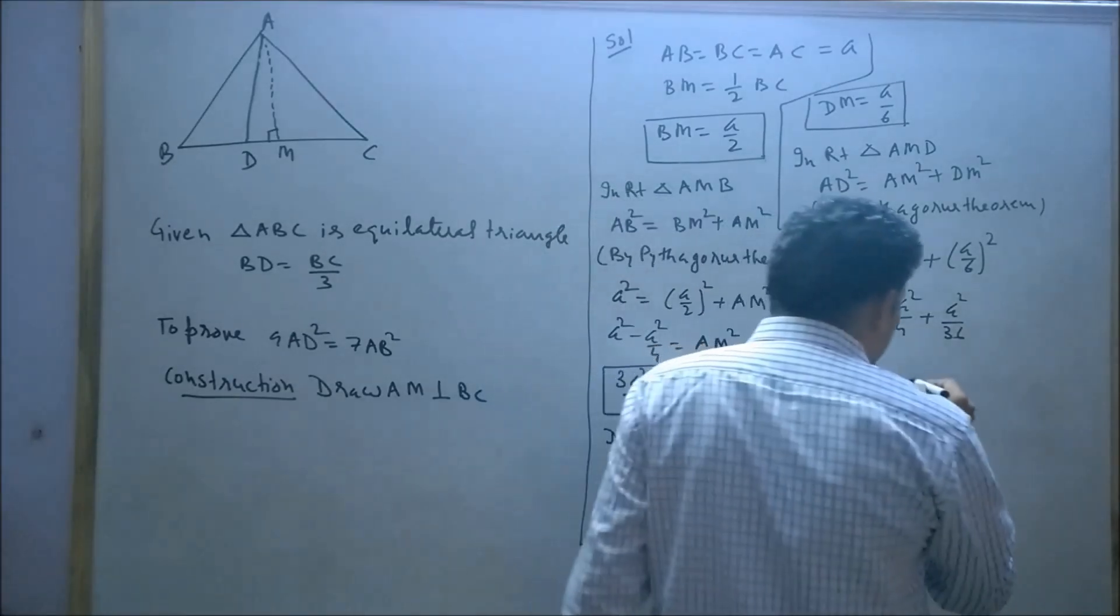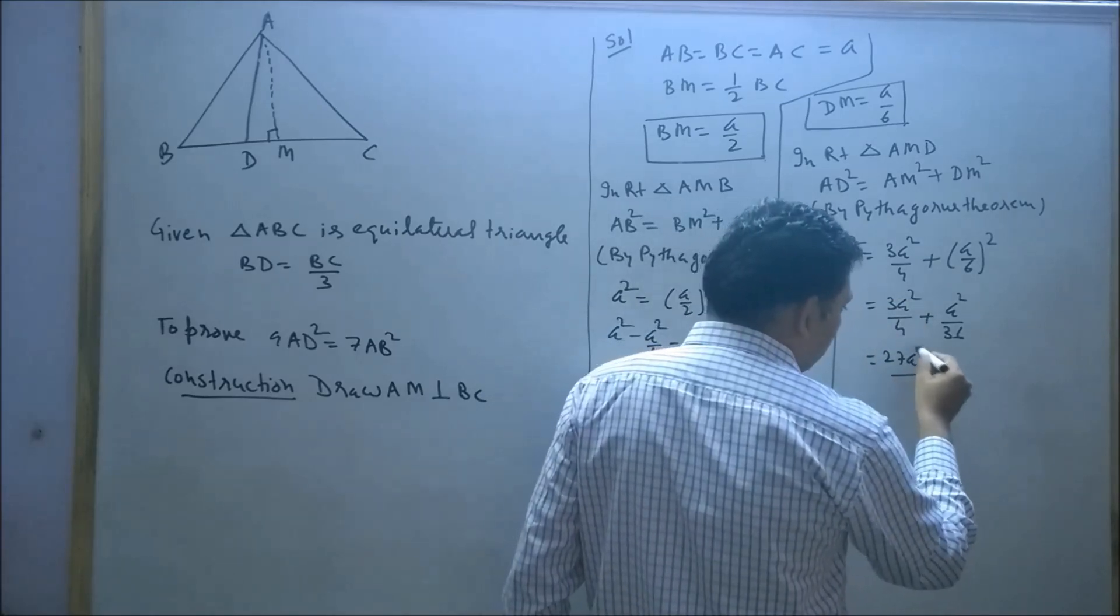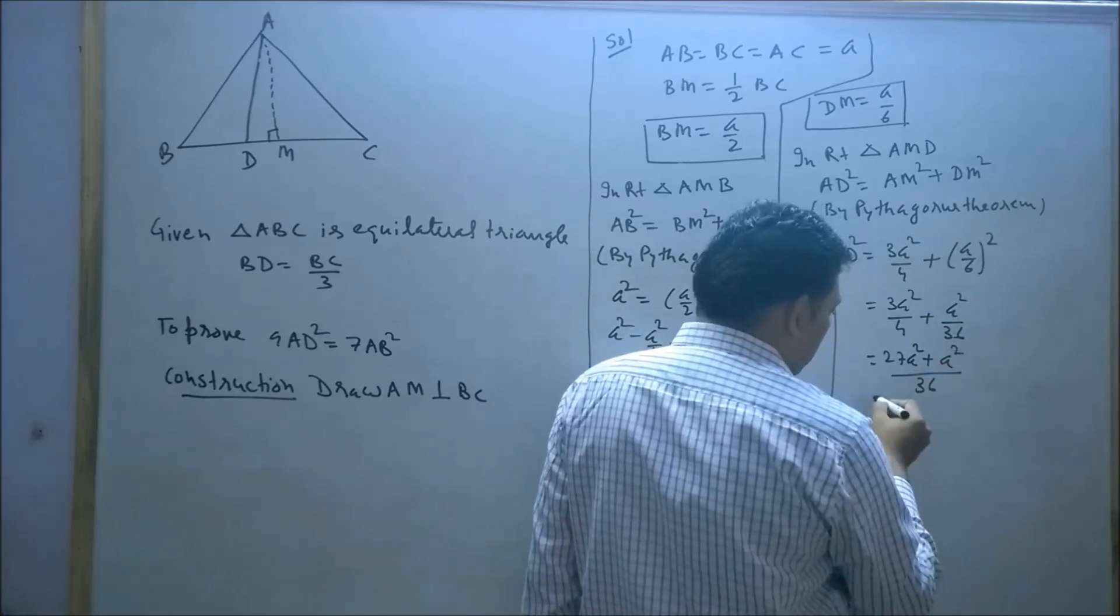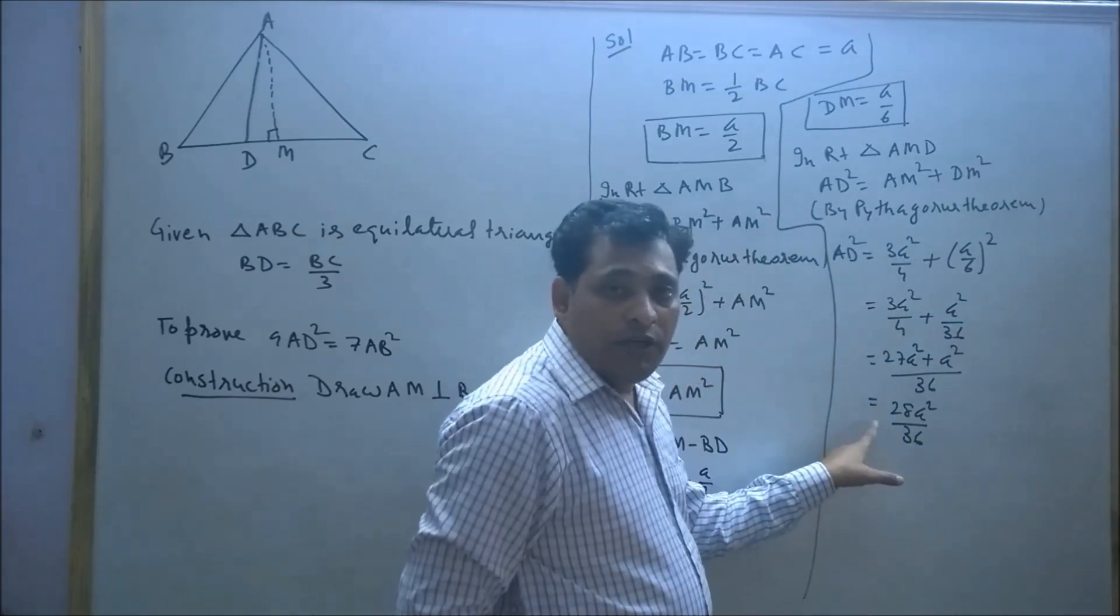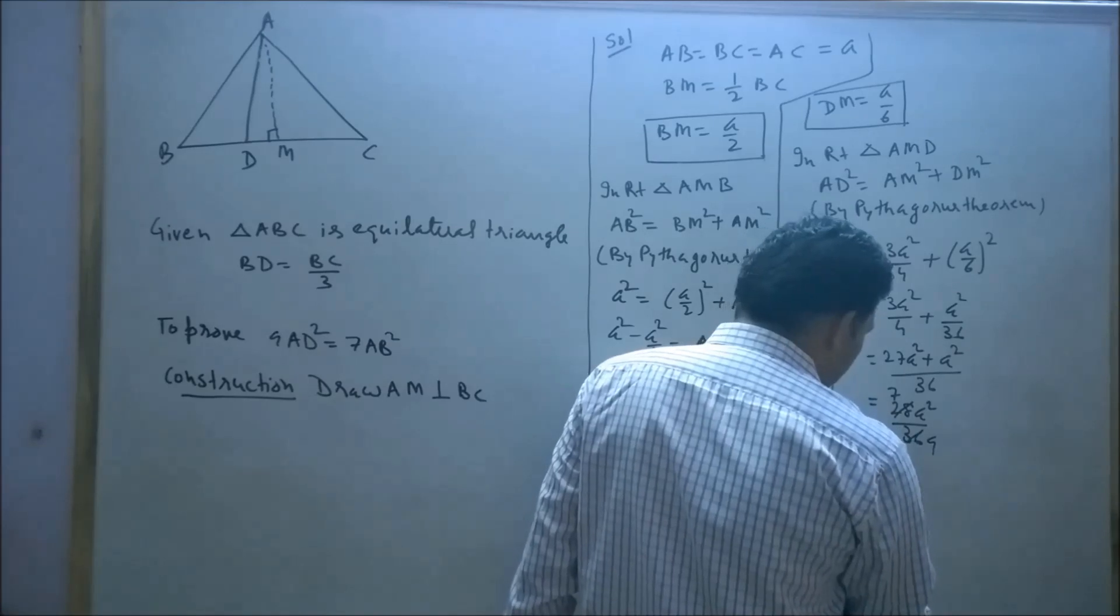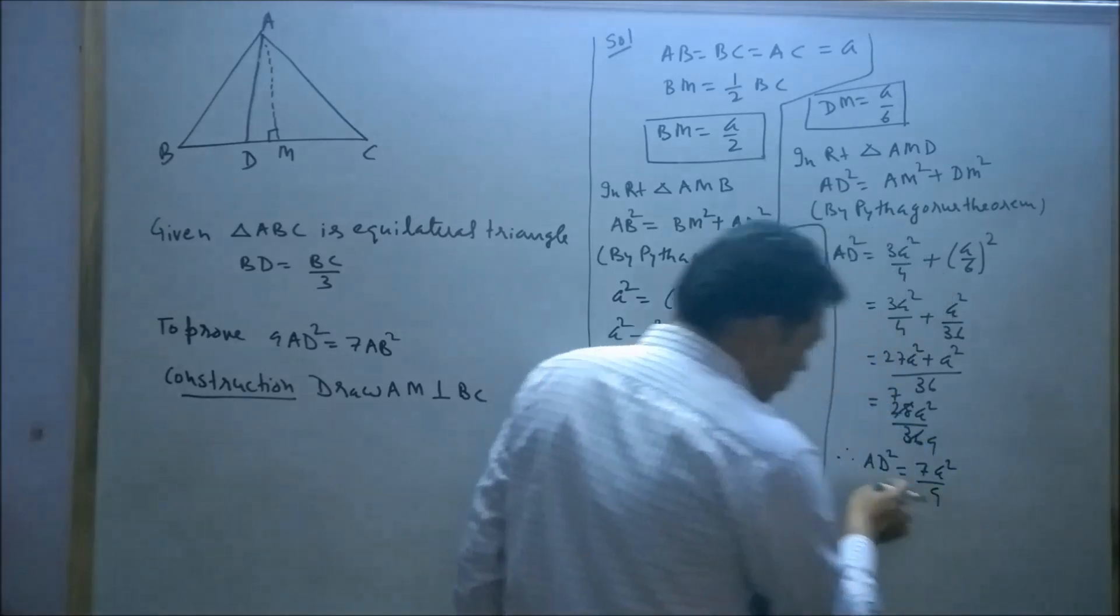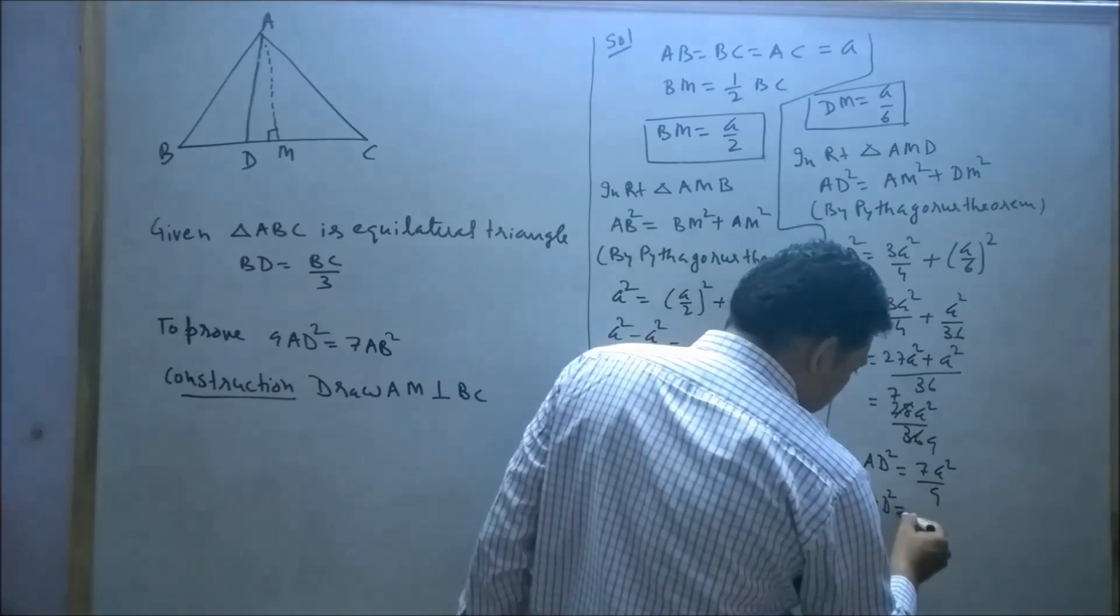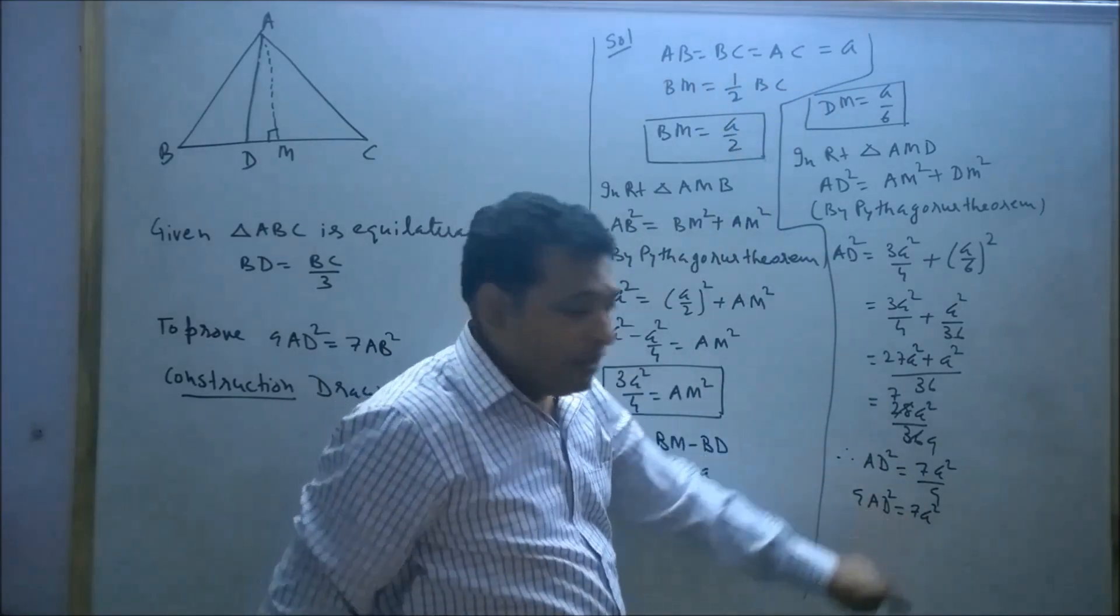Taking LCM of 4 and 36, which is 36: this gives 27a² plus a² equals 28a²/36. Reducing 28/36 by 4 gives 7/9. Therefore AD² equals 7a²/9. Cross-multiplying: 9AD² equals 7a². Here a equals AB, so 9AD² equals 7AB².